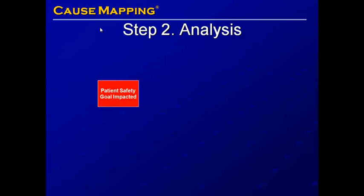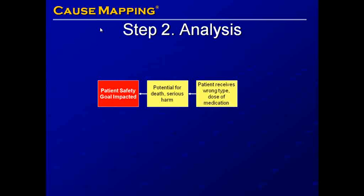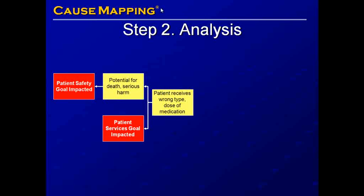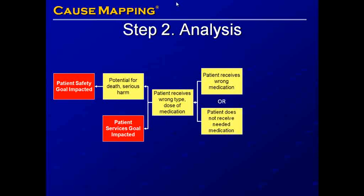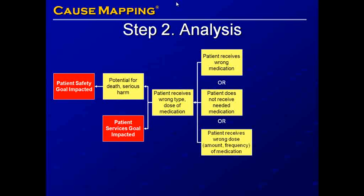To perform the analysis, we begin with an impacted goal and ask why questions to fill out the cause map. The patient safety goal is impacted. Why? Because of the potential for death or serious harm to the patient. Why is there the potential for death or serious harm? Because the patient receives the wrong type or dose of medication. This is also the reason the patient services goal was impacted. We continue asking why: the patient may receive the wrong medication, the patient may not receive needed medication, or the patient may receive the wrong dose — considering both amount and frequency.